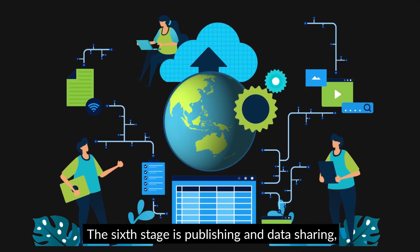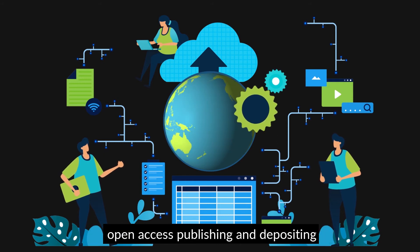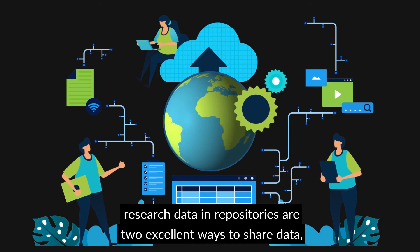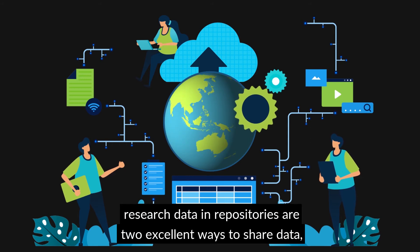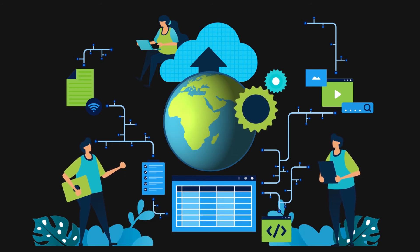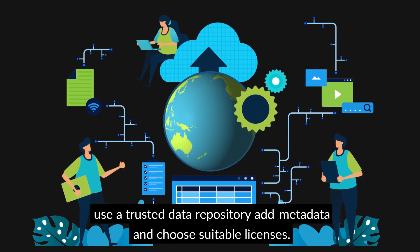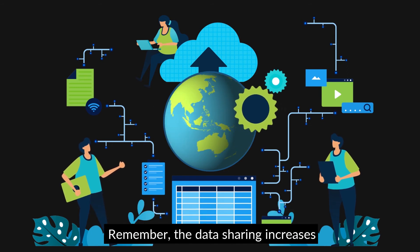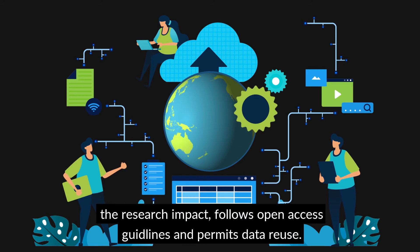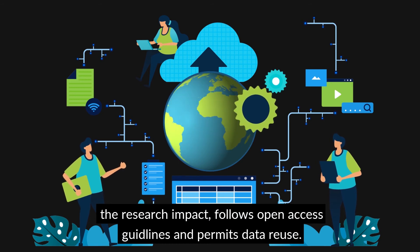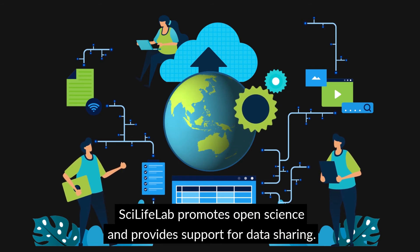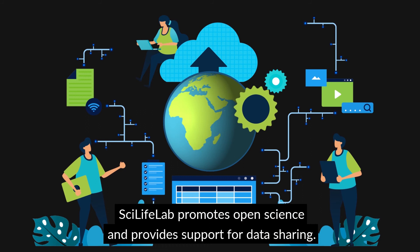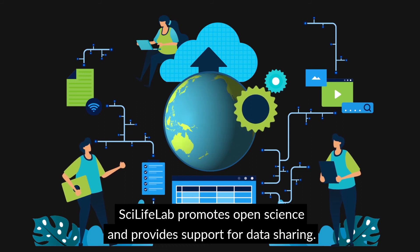The sixth stage is publishing and data sharing. Open access publishing and depositing research data in repositories are two excellent ways to share data. Use a trusted data repository, add metadata and choose suitable licences. Remember that data sharing increases the research impact, follows open access guidelines and permits data reuse. SciLifeLab promotes open science and provides support for data sharing.